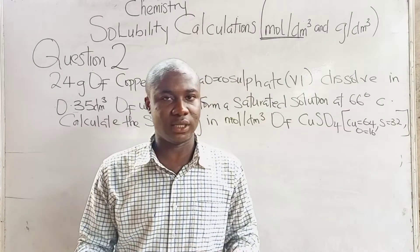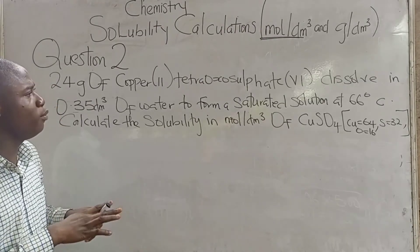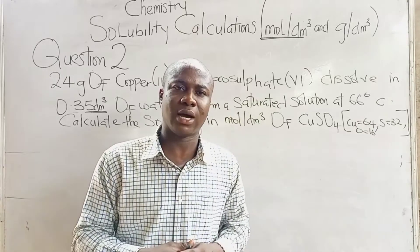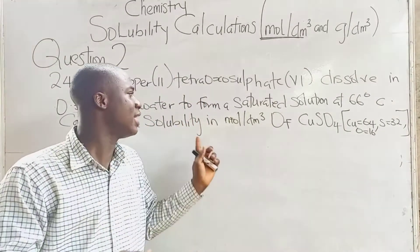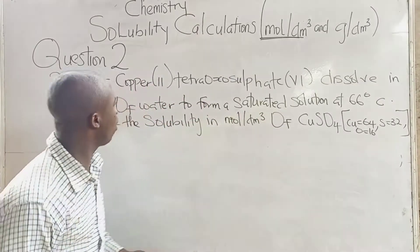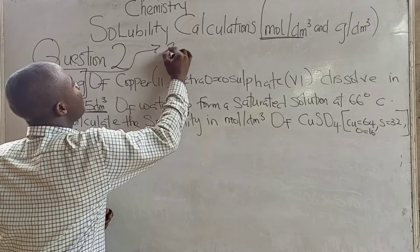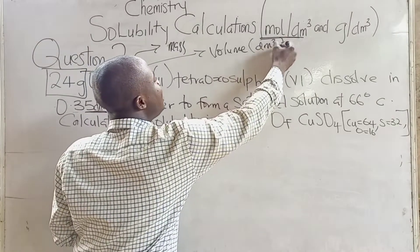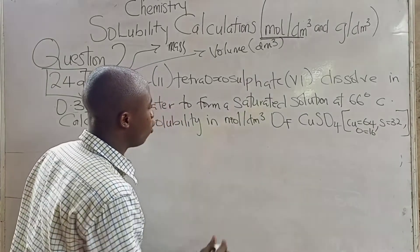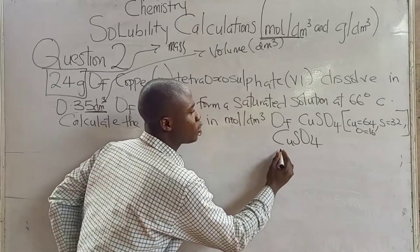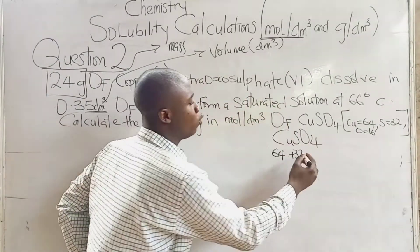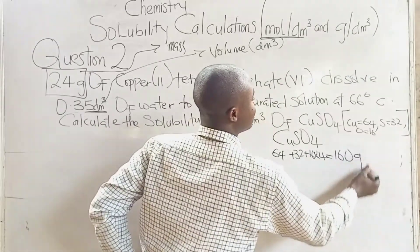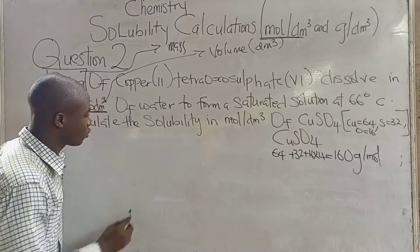Let's move to the second question. If we check this question carefully, you can see that the volume given is in dm³, so we are removing 1,000 from the formula. The question asks us to calculate the solubility in moles per dm³ of CuSO₄. The mass given is 24 grams and the volume is 0.35 dm³. The molar mass of CuSO₄: copper is 64, sulfur is 32, oxygen is 16 × 4 = 64, giving a molar mass of 160 grams per mole.